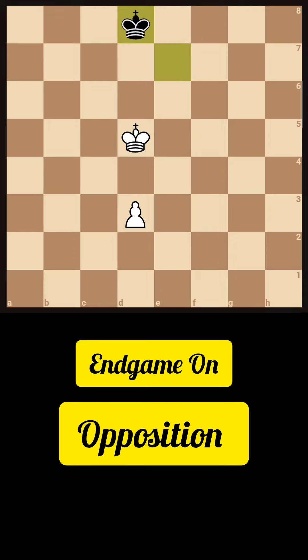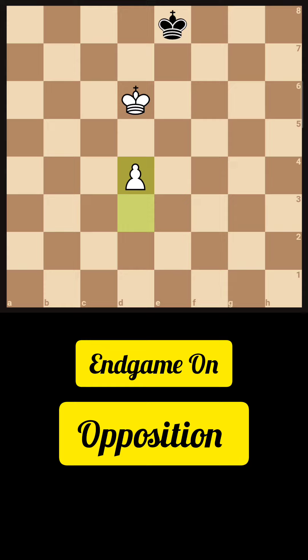Why is the square gap so important, you may ask? When black gains the opposition to white and white is forced to move, that pawn gap is gonna come very handy because when the pawn tenders move a square above and white gains the opposition and black has to move.